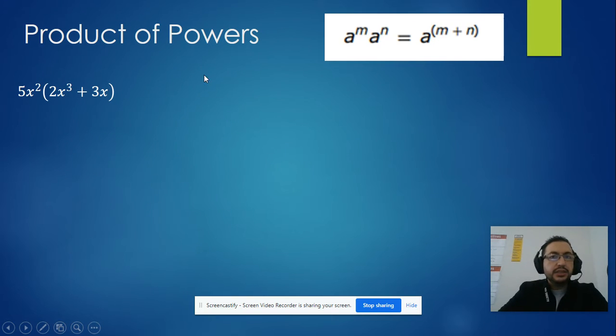Now let's see this example. We have this monomial multiplied by this binomial. So what we're going to do is use distributive property and then try to simplify the expression. So we're going to multiply 5x to the second power times 2x to the third power, and then plus 5x to the second power times 3x. We're going to do it like this, using distributive property.